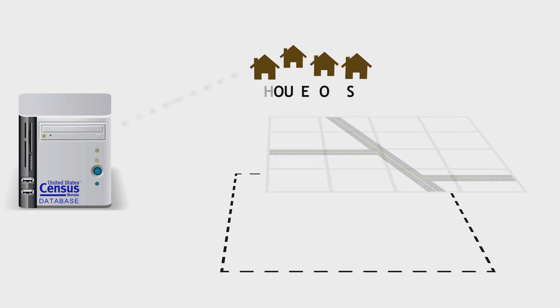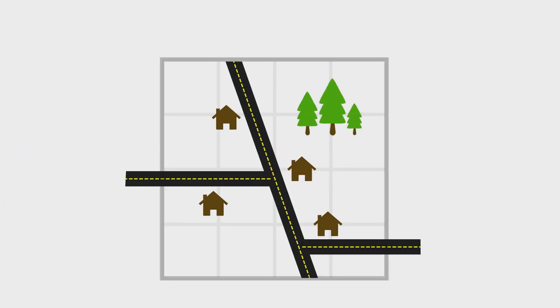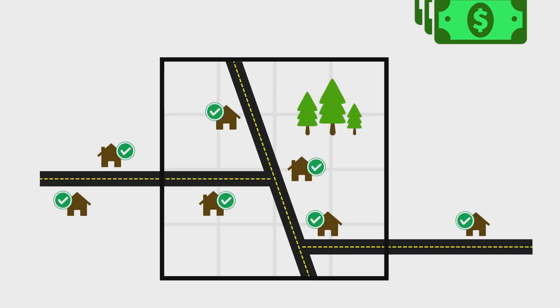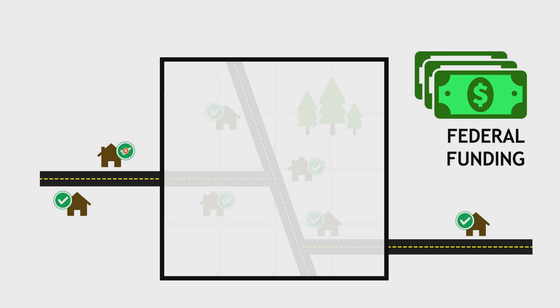Demographic data is tied to households and tabulated within boundaries for the American Community Survey and other census data. Houses lying outside of a boundary which has not been updated, resulting in undercoverage, can affect the allocation of federal funding.